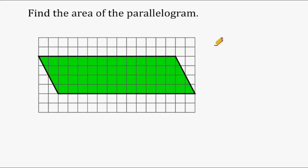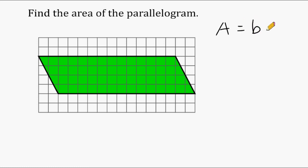For this problem we have to figure out the area of a parallelogram shown on the grid. To find the area of any parallelogram, we multiply its base by its height. So we need to use the grid to determine this parallelogram's base length and its height length.